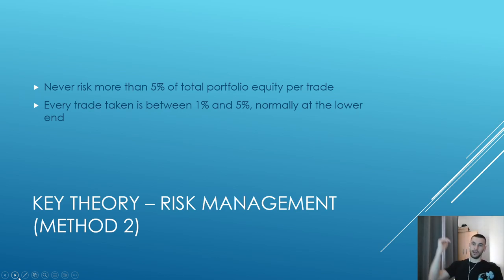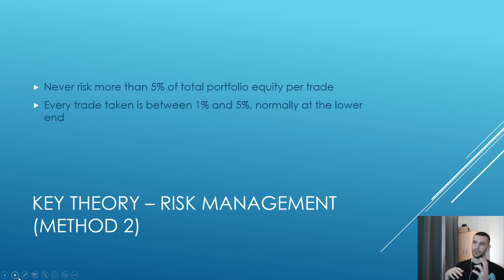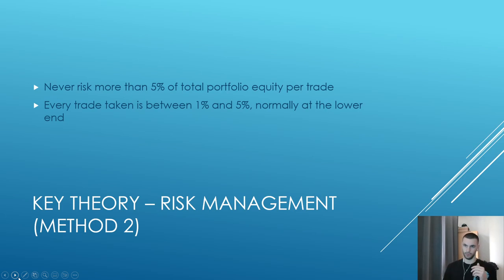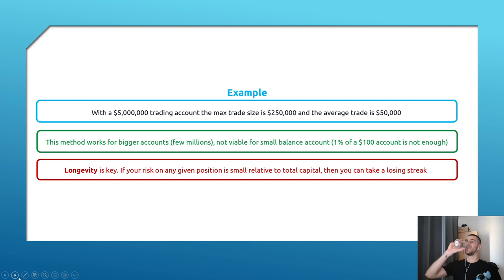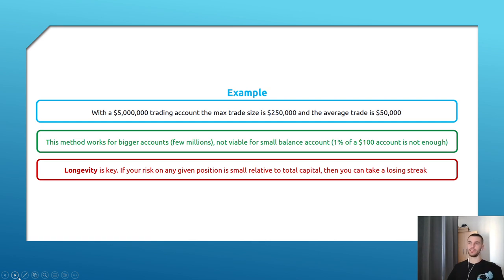The second method applies to larger accounts. You should not risk more than 5% of the total portfolio per trade. Every trade taken is between 1% and 5% from the account, normally at the lower end — say 1% or 2%. For example, with a five million dollar account the maximum trading size is 250k per trade and the average trade is around 50k. This method works on bigger accounts of a few million — not for accounts below 200k. Longevity is key: if risk on any given position is small relative to your capital, you can survive a losing streak.